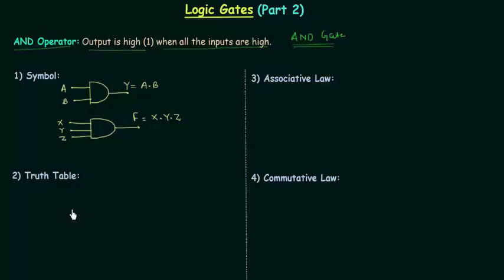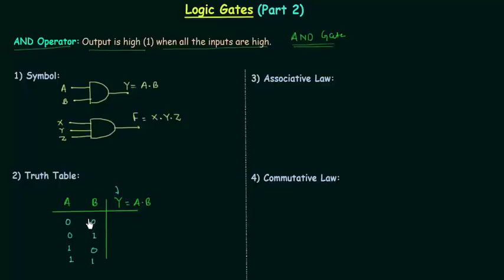Now we will move to the truth table for AND gate. I will take a two-input AND gate, so we have A and B as two inputs and output is Y. As there are two inputs we will have four possible combinations: 00, 01, 10, 11. We have to find out Y depending upon the values of A and B. In AND operator, output is high when all inputs are high. So output Y for the first case is 0 because both A and B are 0. In the second case output is 0 because A is 0. In the third case output is 0 because B is 0. And in the last case output is 1 because both A and B are high. This truth table is very important because we will use it a lot in this course.